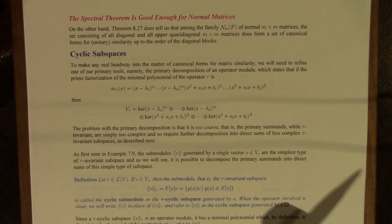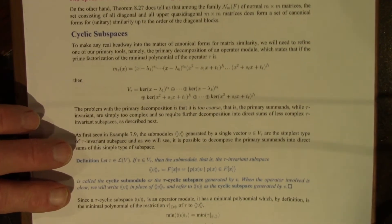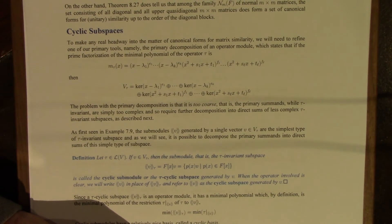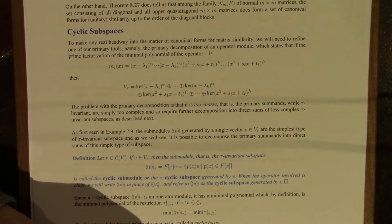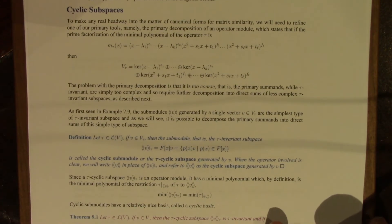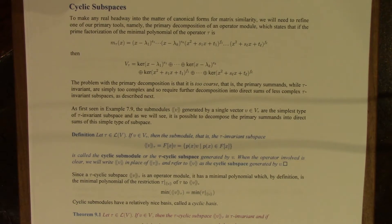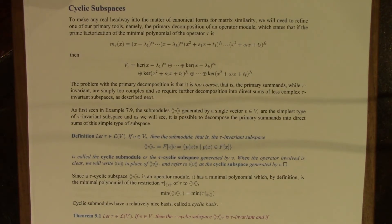The spectral theorem will provide a set of canonical forms, but only for normal matrices. The set consisting of all diagonal and upper quasi-diagonal matrices of a fixed size does form a set of canonical forms for similarity, up to the order of the diagonal blocks. But normal matrices are very special matrices, so we're a long way from our goal of finding a set of canonical forms for all matrices of a given square size.